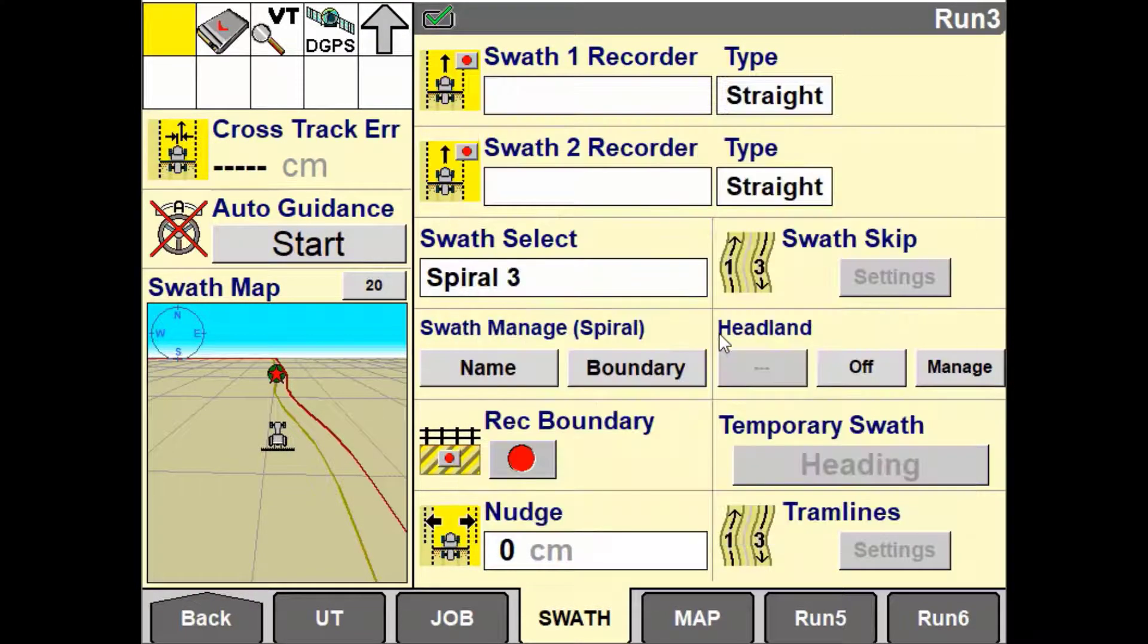Once a headland is either created or selected from the list, the headland user defined window will provide the options to disable and enable the headland. Setting headlands to on will indicate to the implement to observe the headlands.